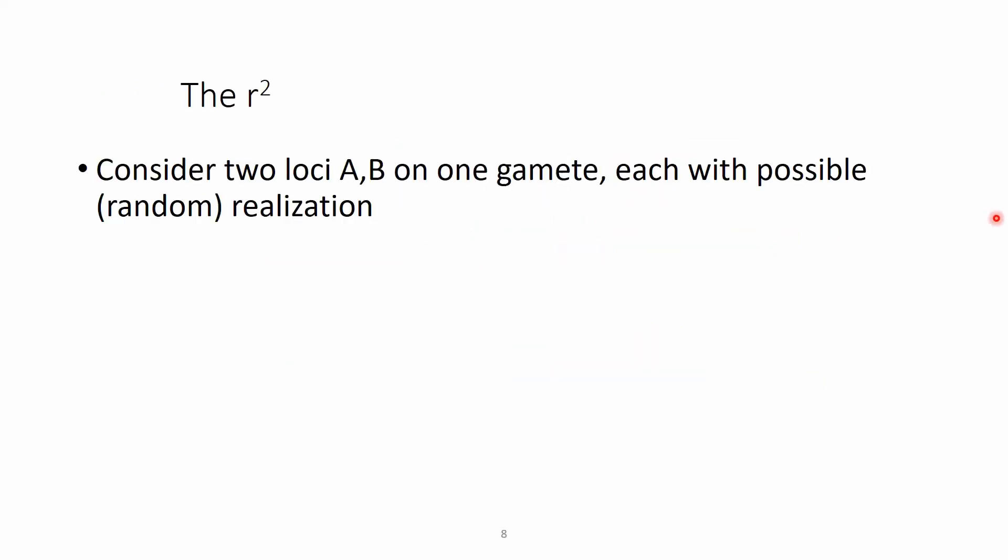Now to answer this question, we have to reformulate our example a little bit, and we consider two loci A and B again on one gamete, but each with a possible random realization. We give the value of one to locus A with the probability of P capital A and the value of zero with the probability of one minus P capital A. So this is the P A and P capital A, and then this is the P lowercase a. Because P lowercase a and capital A equal to one, so the sum of them is equal to one, the P lowercase a could be expressed as one minus capital A.